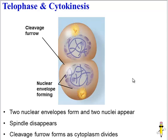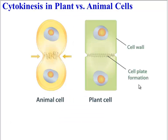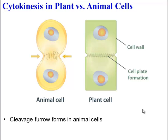One last note: we just observed mitosis in an animal cell. If you were to observe this in a plant cell, there would be many similarities but one key difference. In an animal cell during cytokinesis, we get a cleavage furrow because the cytoplasm is just pinching apart. But in plant cells, because they have a cell wall around their cell membrane, a cleavage furrow will not form. Instead, you'll get a cell plate made up of a cell wall. And that concludes our investigation of mitosis, a small but important phase of the cell cycle.